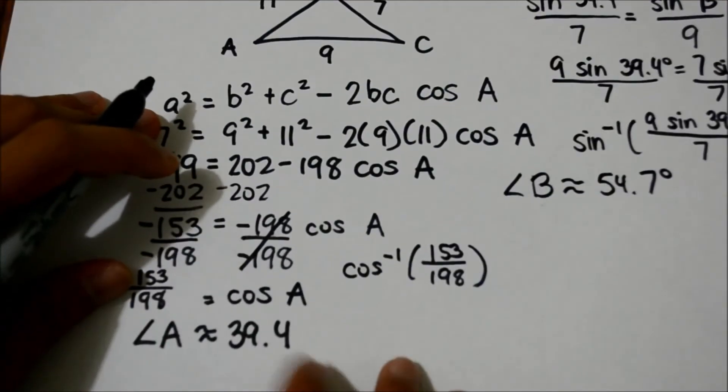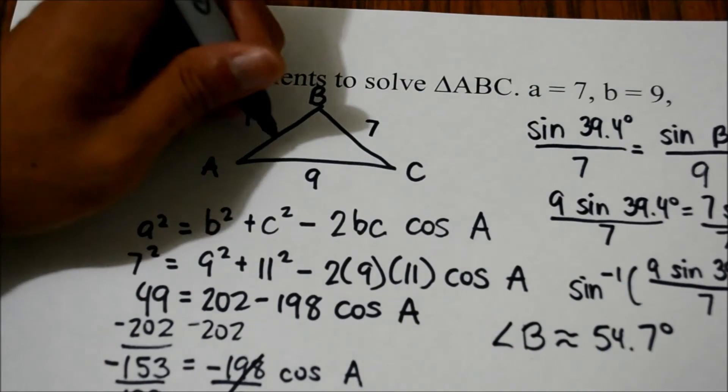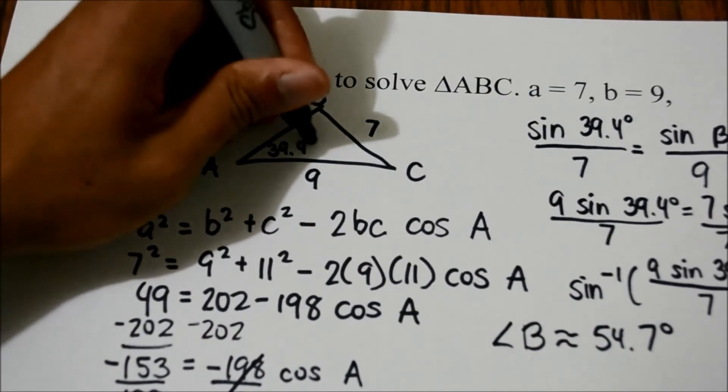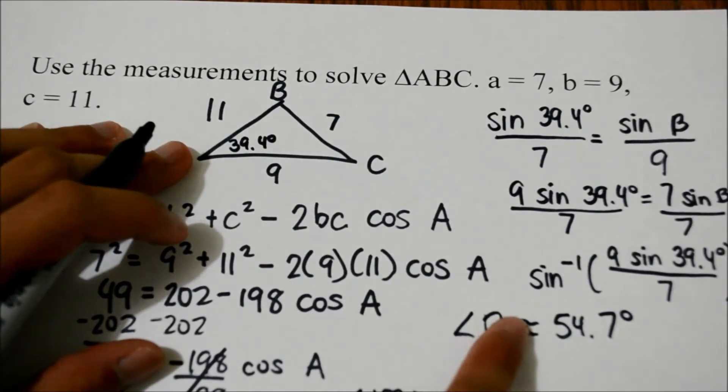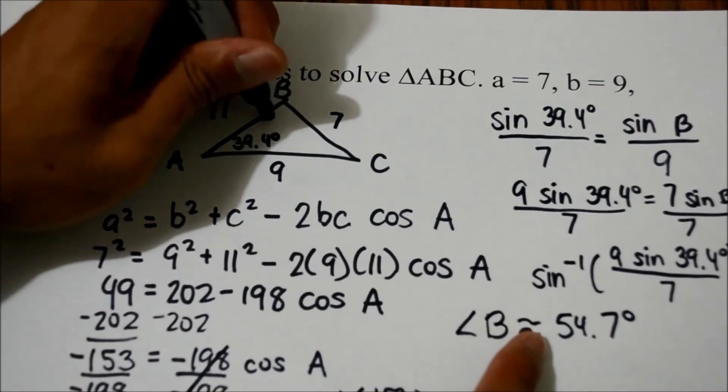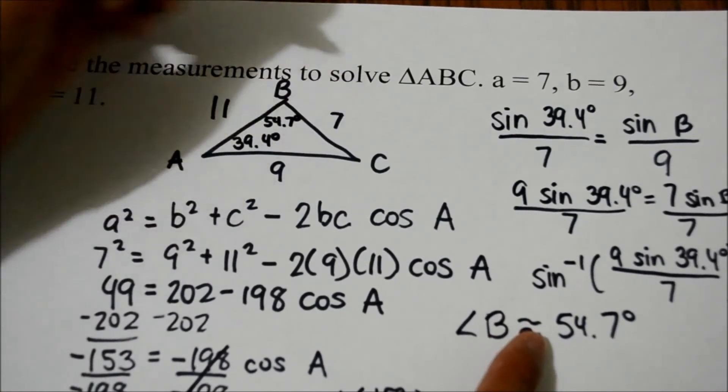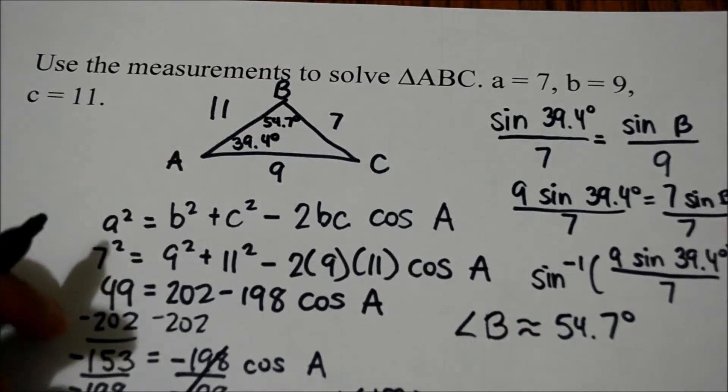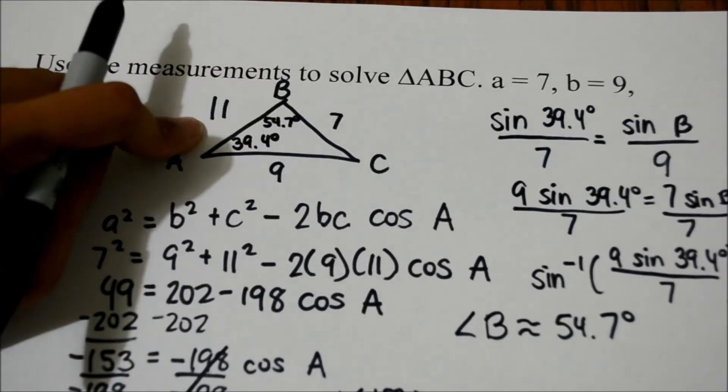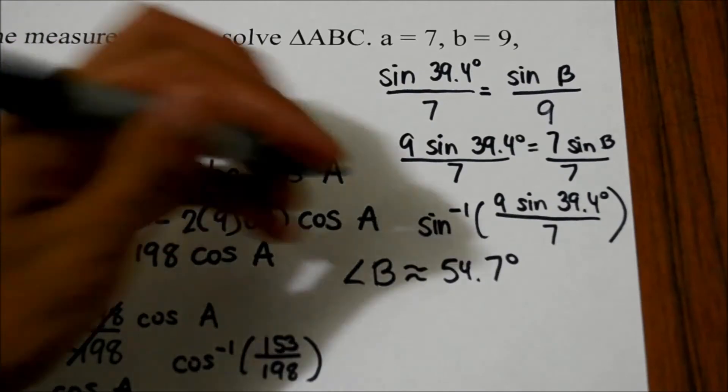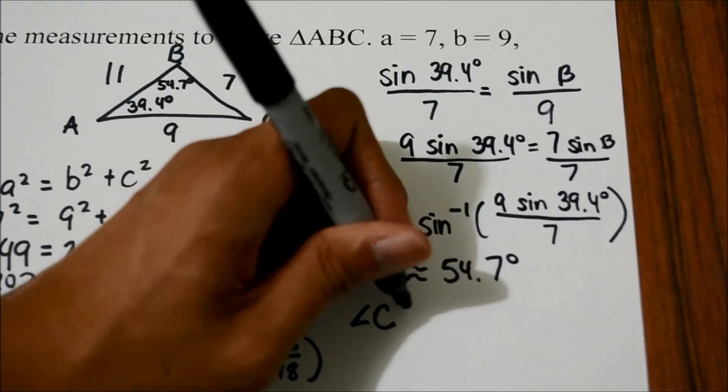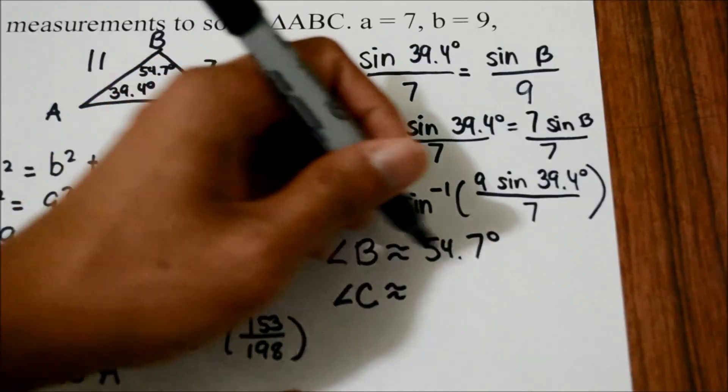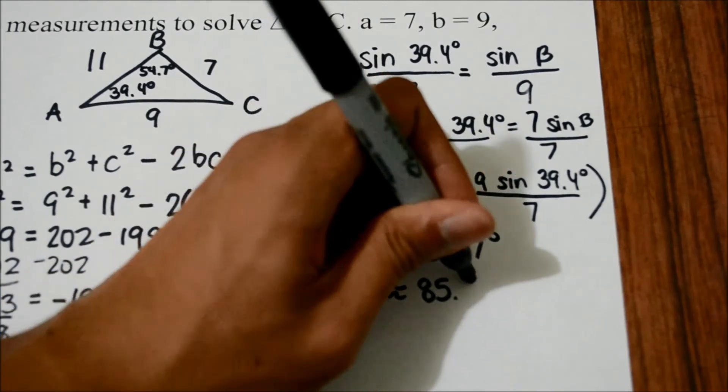So angle A is 39.4 degrees. Angle B is 54.7 degrees. Now to find the angle of C, we can add angles A and B and subtract it from 180 degrees, which will lead you to angle C is 85.9 degrees.